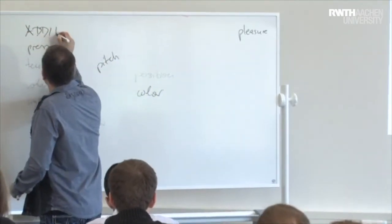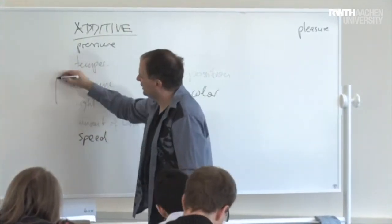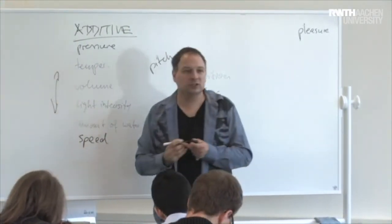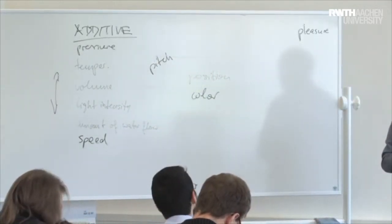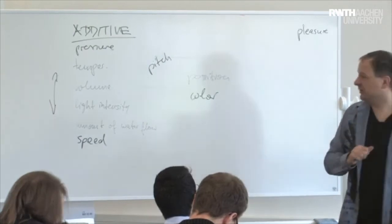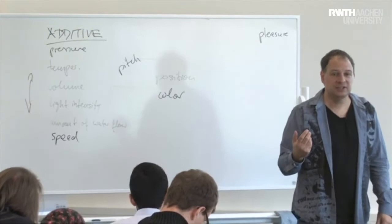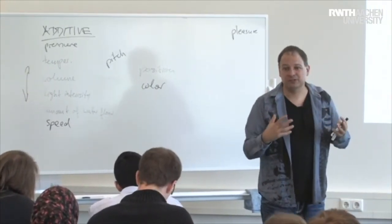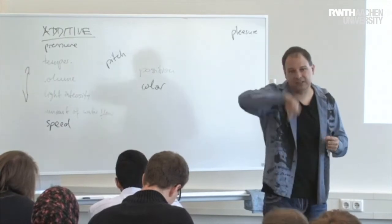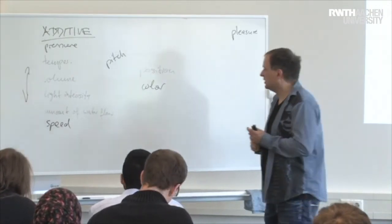So, all of these are what we call additive dimensions. And so, they are easy to arrange in a sort of less, more kind of way. We all kind of intuitively agree. Which, of course, means if you have any of those kind of values to display in an interface or to control in an interface, nature is giving you the perfect mapping right there. You know, up and down. Everybody will agree on that.